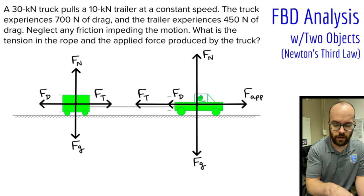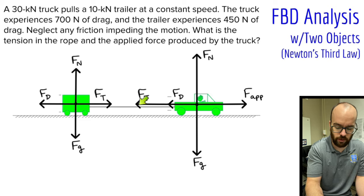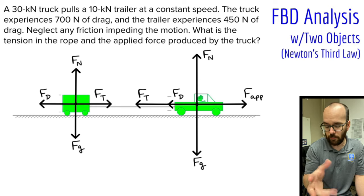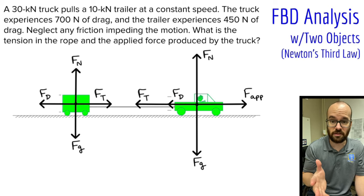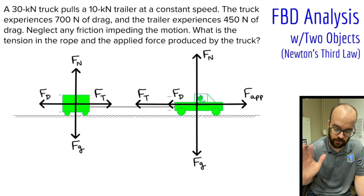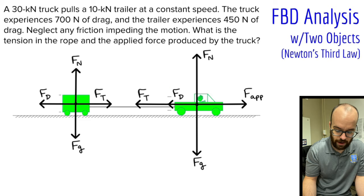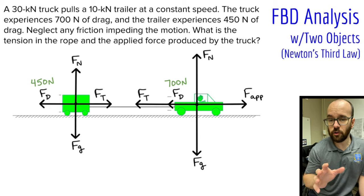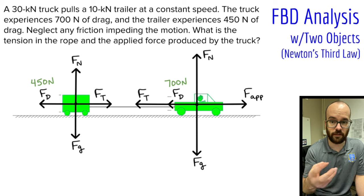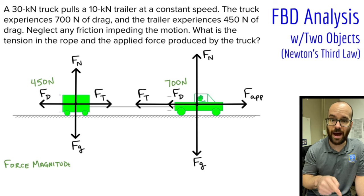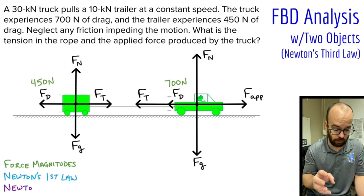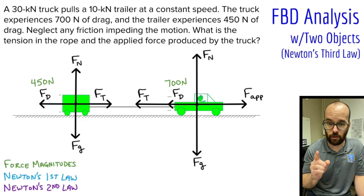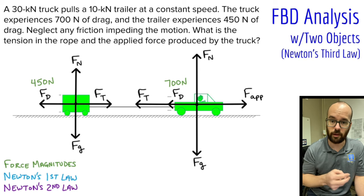I'm looking for the tension in the rope and the applied force, both horizontal. So I'll focus on horizontal forces and ignore the vertical ones for this problem. I'll label 700 newtons of drag on the truck and 450 newtons of drag on the trailer. I'll use color coding: green for force magnitudes, blue when I apply Newton's first law, and purple when I apply Newton's third law.